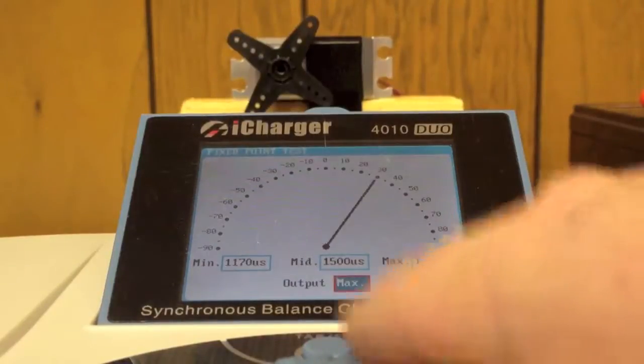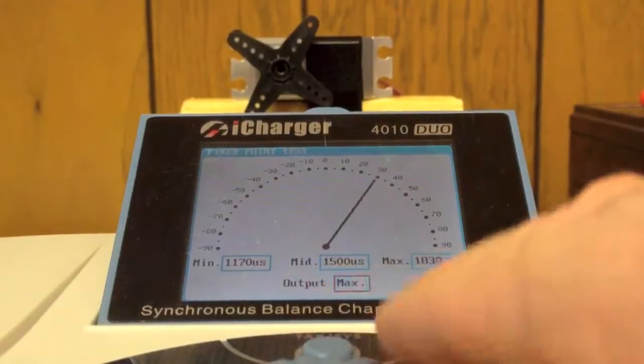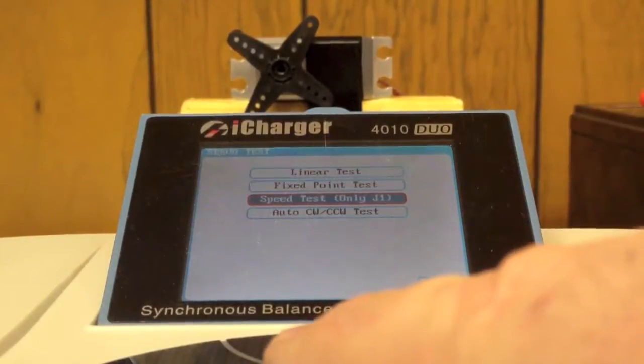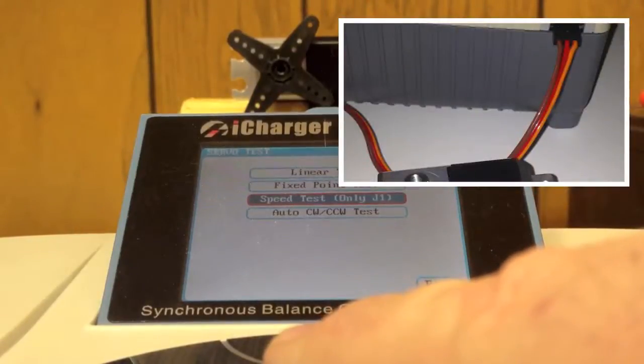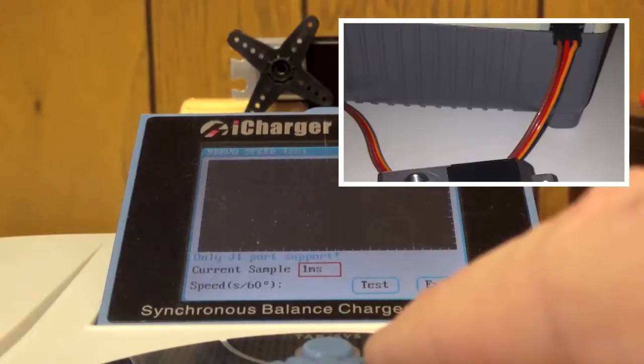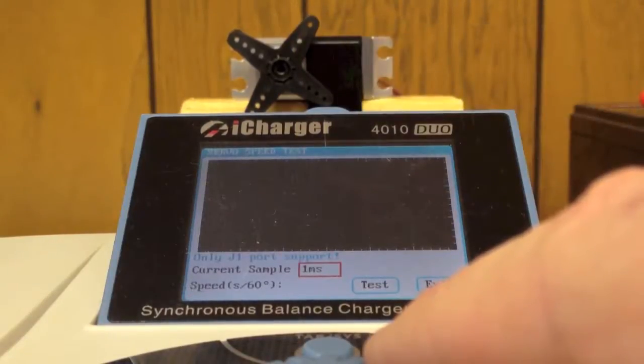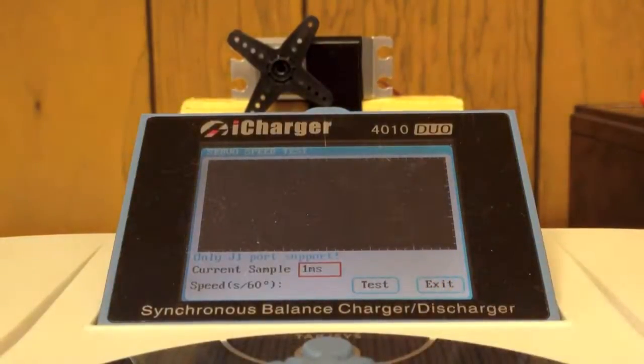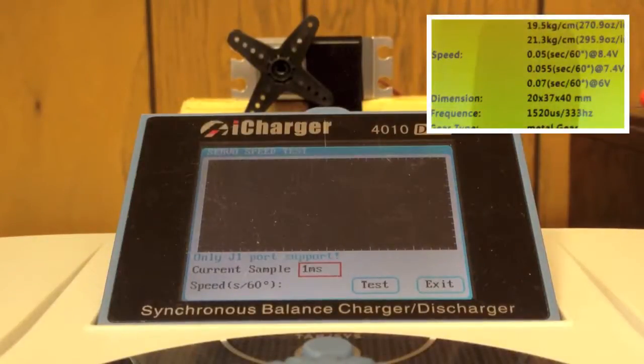So let's come off of this screen now and go into the speed test. And it says here only J1 on the side of the charger. There's a J1 port and a J2 port. It says the speed is for 60 degrees. And if you think about the screen we were just visiting, we had 30 degrees to the left, 30 degrees to the right. Add those together, that's 60 degrees of travel.